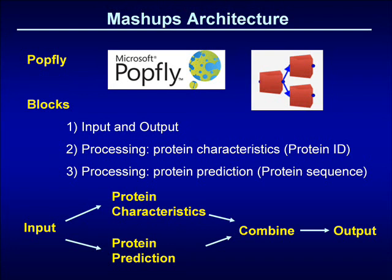In this slide we see the overall format for a protein bio mashup. The input is in the form of a protein ID or protein sequence. The input is then passed to processing blocks, which may retrieve known information about a protein from a database or perform a protein prediction. The results from various processing blocks are then combined together and displayed.